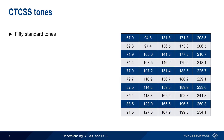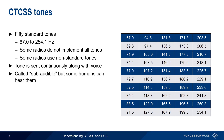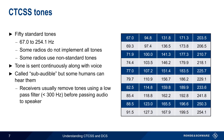There are 50 standard CTCSS tones in the range of 67 to 254.1 Hz. Note however that some radios don't implement all of these tones, and some radios even use non-standard tones. Recall that these tones are transmitted continuously while the useful voice or other audio is being sent. Although these frequencies are low enough that they are called subaudible, it is possible for some humans to hear them. Therefore, receivers usually remove these tones using a low-pass filter before the speaker or audio output.